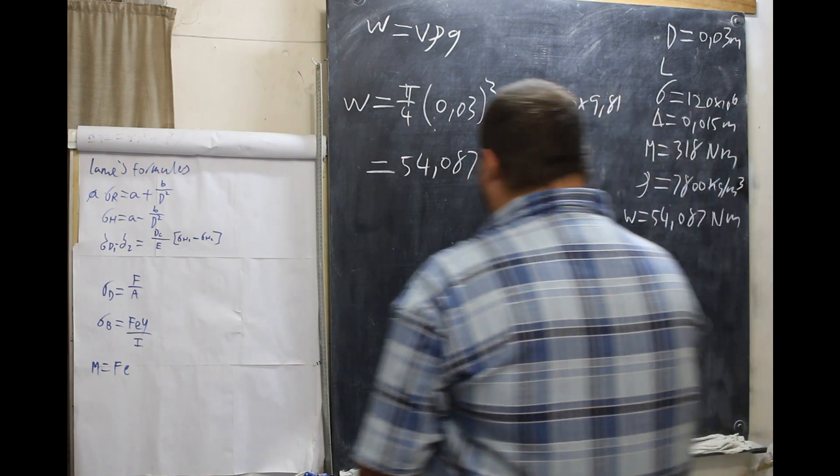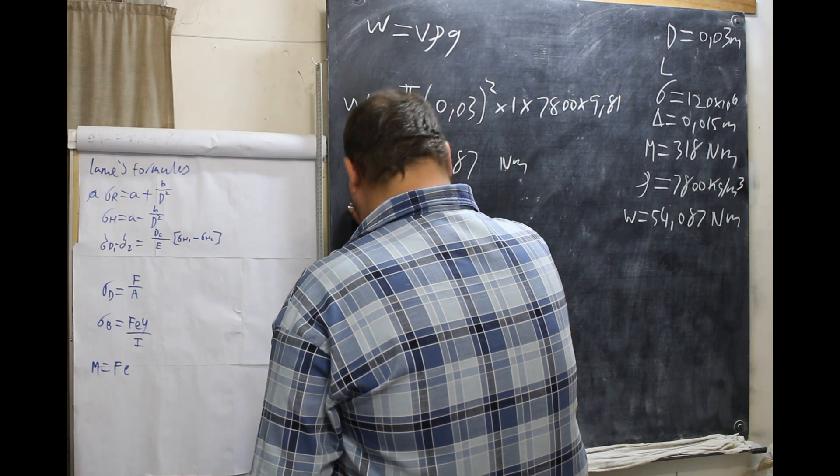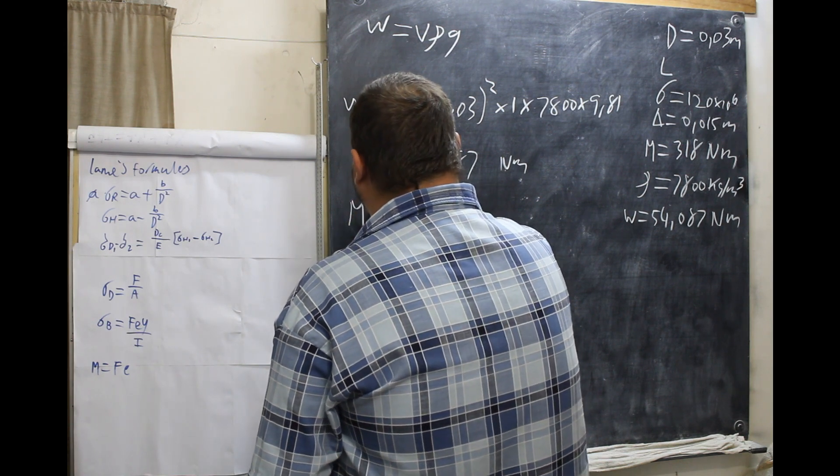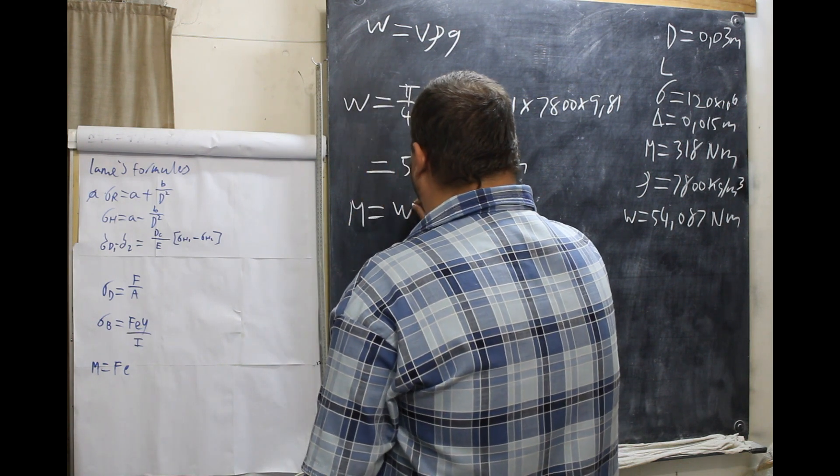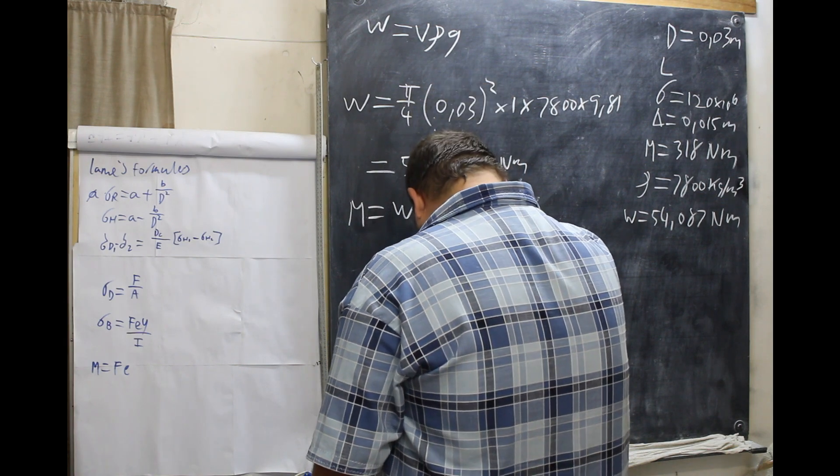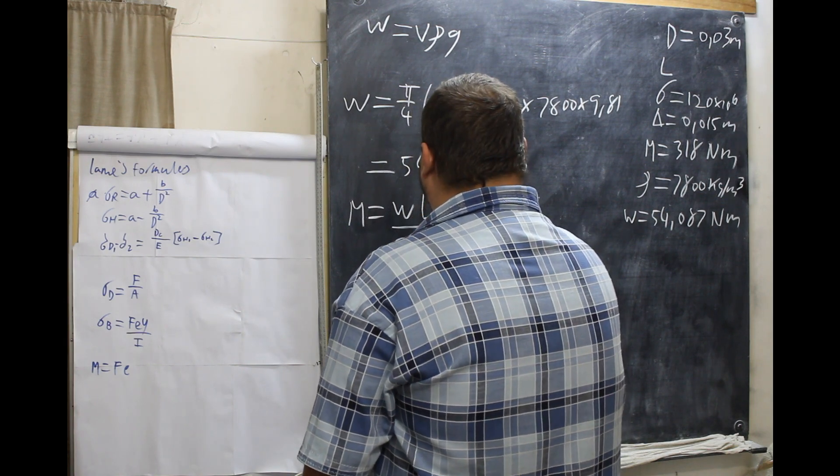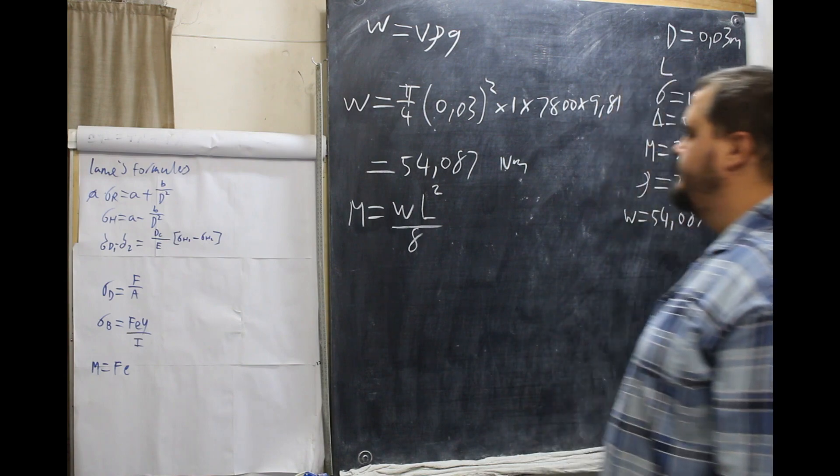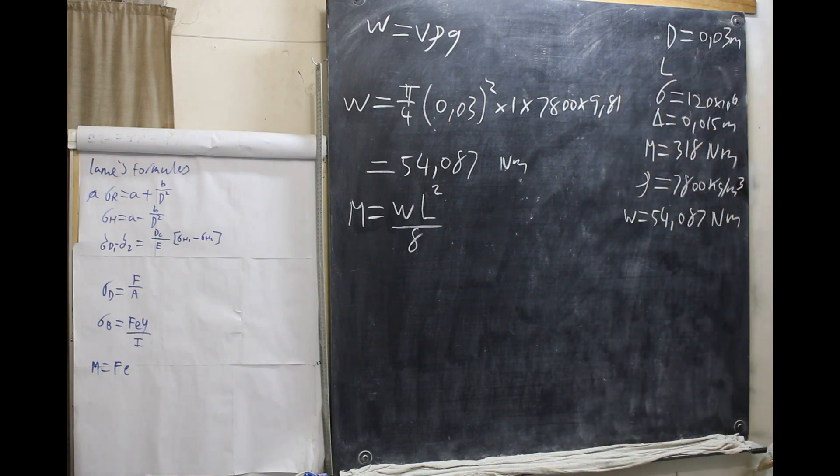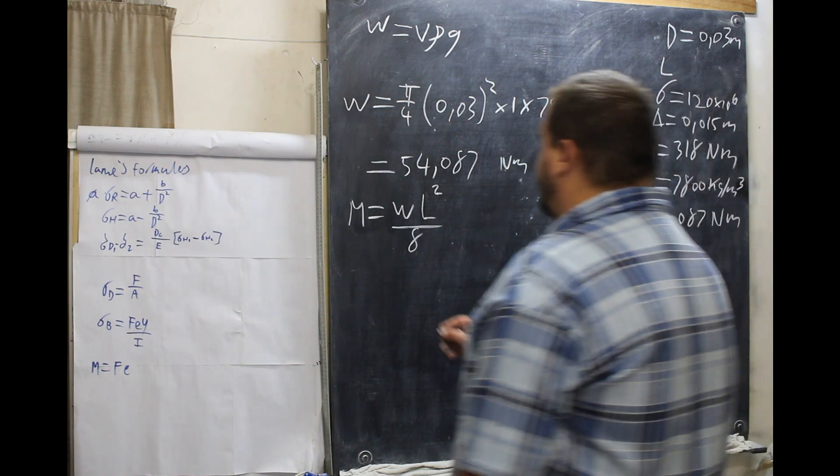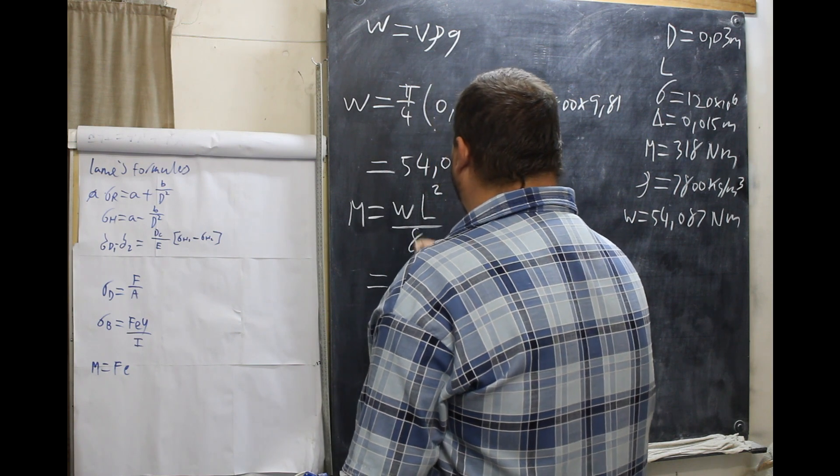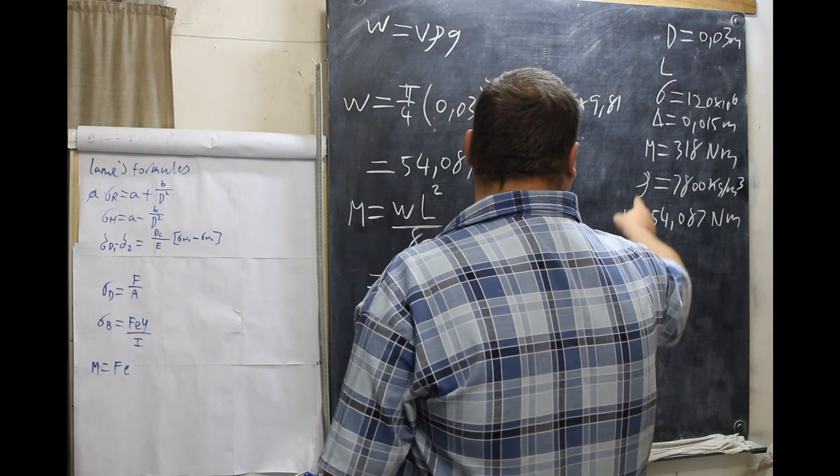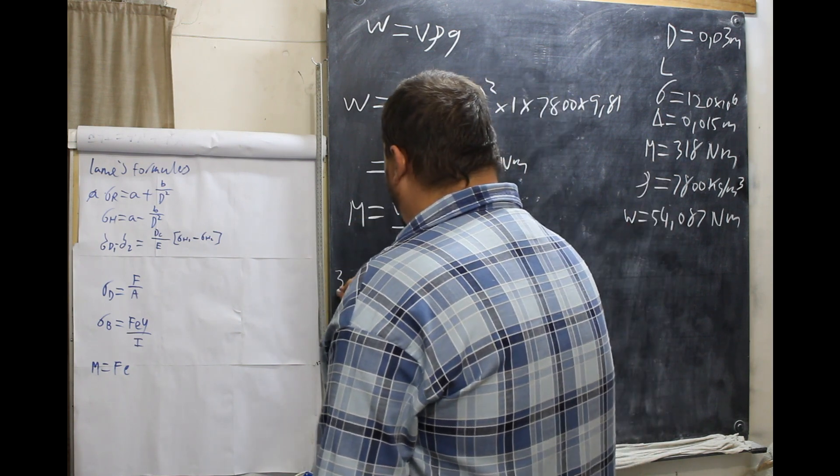Now, we have to use M is also equal to weight times L squared over 8. So, we multiply by 8. We want L. So, we have M, 318.